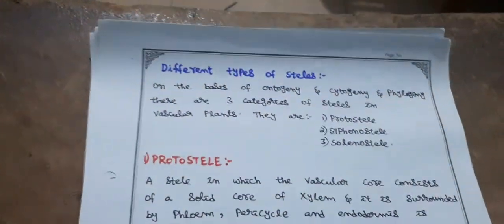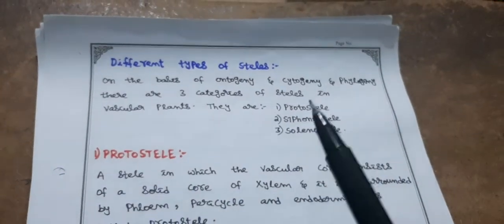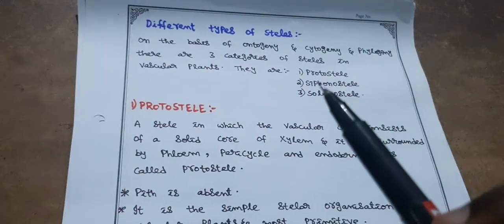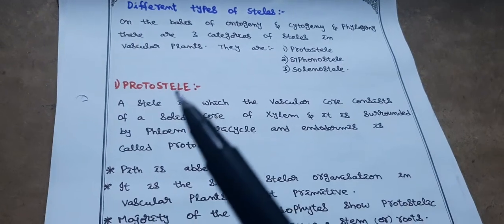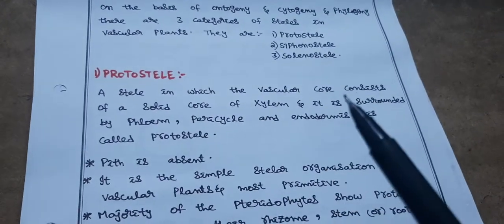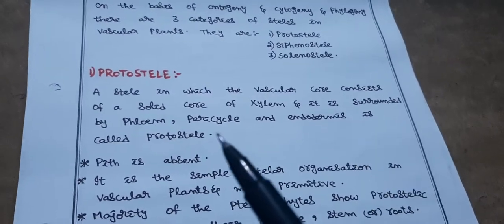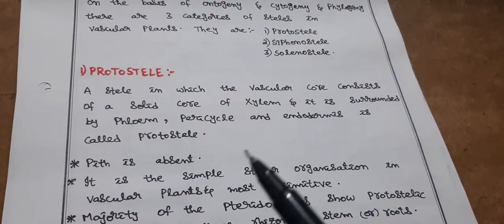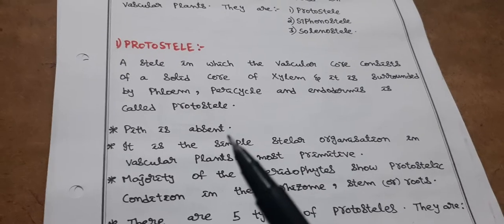On the basis of ontogeny and phylogeny there are three categories of steles in vascular plants: protostele, siphonostele, and solenostele. Protostele is the ancient, primary stele — a stele in which the vascular core consists of a solid core of xylem surrounded by phloem, pericycle, and endodermis. Pith is absent in protostele.